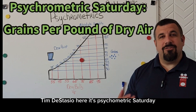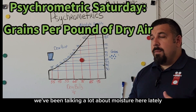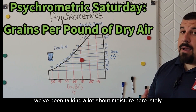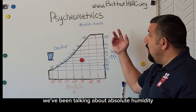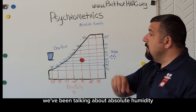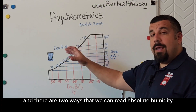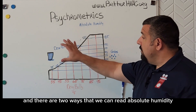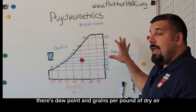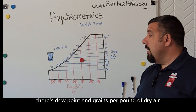Tim DeStasio here. It's Psychometric Saturday. We've been talking a lot about moisture here lately — absolute humidity — and there are two ways that we can read absolute humidity: dew point and grains per pound of dry air.